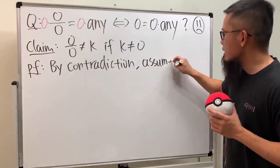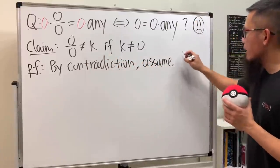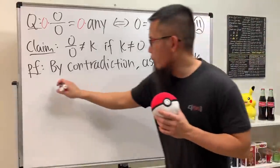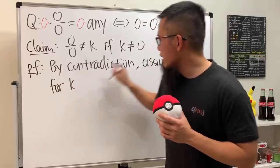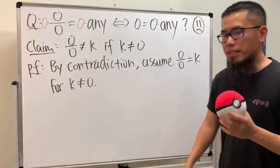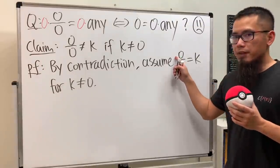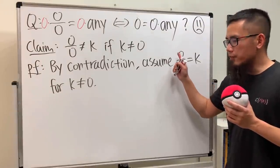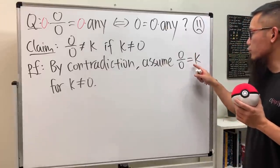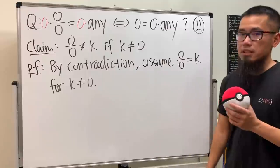Namely we say zero over zero is equal to k for k not equal to zero. So that would be a negation. So what we're saying is that if you define zero over zero to be some non-zero number, such as zero over zero to be 2, then these kind of things will happen.